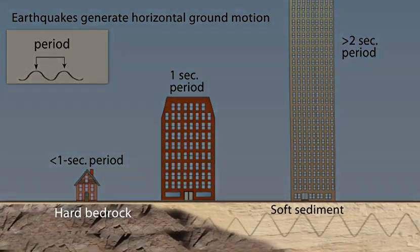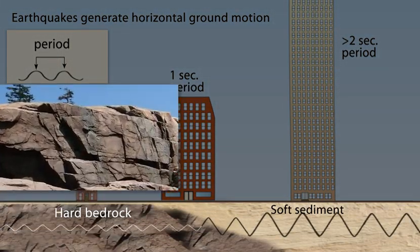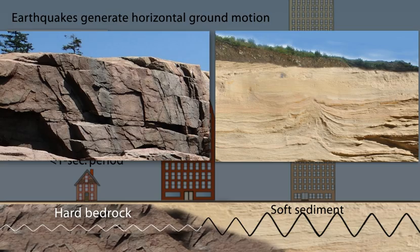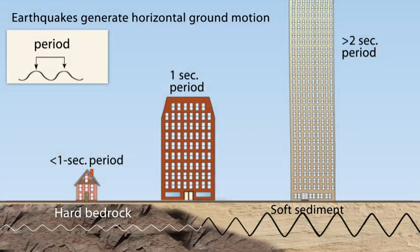The ground also has specific resonant frequency. Hard bedrock has higher frequencies than softer sediments. If the period of ground motion matches the natural resonance of a building, it will undergo the largest oscillations possible and suffer the greatest damage.